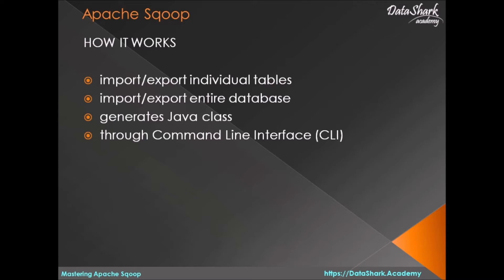Apache Sqoop examines the table structure from source systems such as Oracle and generates Java classes for it. These Java classes are packaged into a jar file and deployed on a Hadoop cluster to be executed by a MapReduce job.